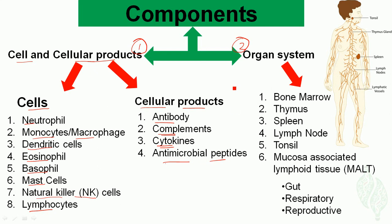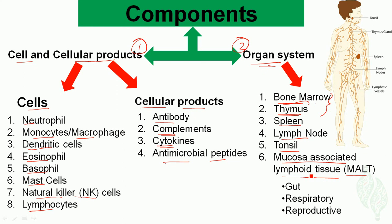In the organ system, we have the bone marrow and thymus, which are called the primary lymphoid organs. We also have the spleen, lymph nodes, tonsils, and the mucosa-associated lymphoid tissue, or MALT.